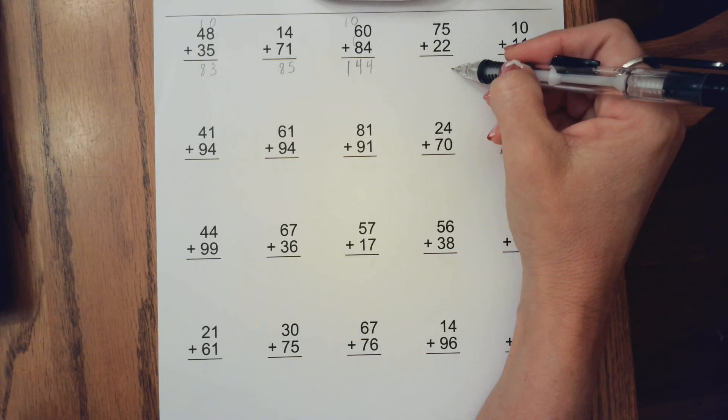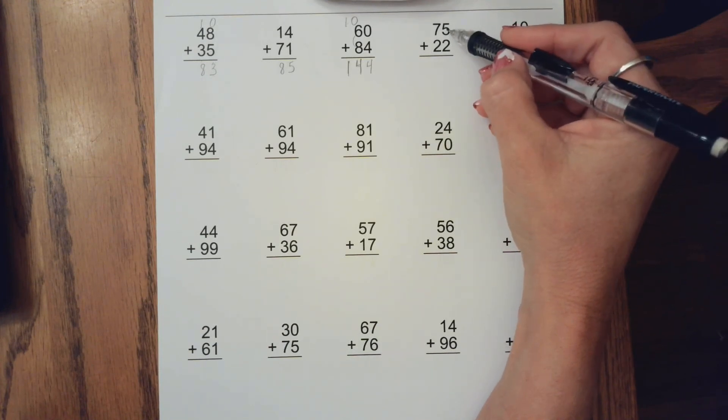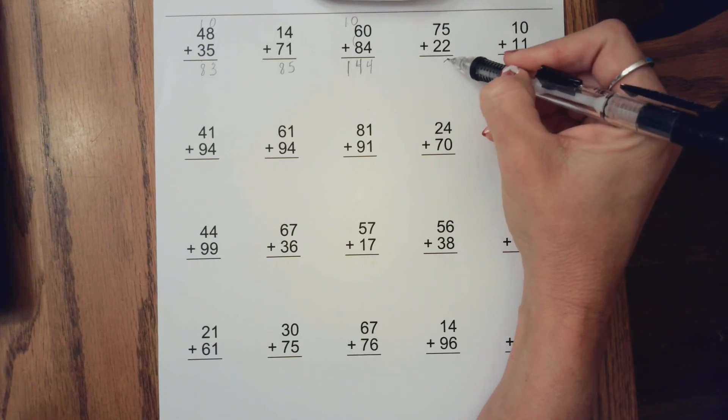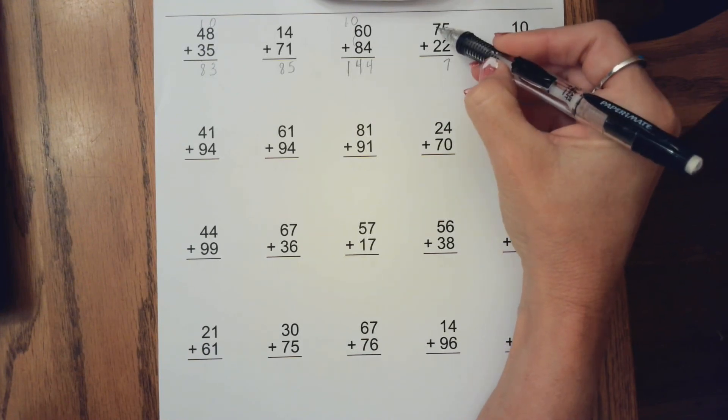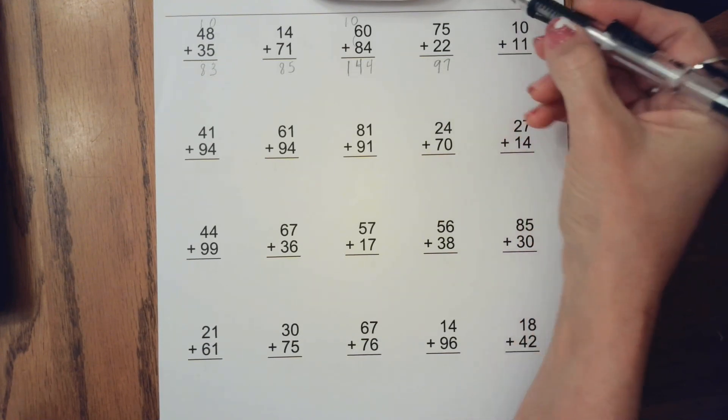I would like you to try the next one on your own. Okay, hopefully you got 5 plus 2 is 7. 7 plus 2 is 9. We didn't have to make a new group.